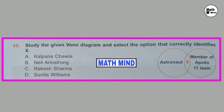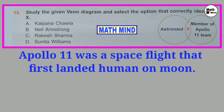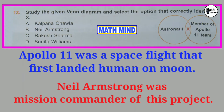Question number 13: Study the given Venn diagram and select the option that correctly identifies X. X is an astronaut who is a member of Apollo 11. Apollo 11 was a spaceflight that first landed humans on the moon. Neil Armstrong, Michael Collins, and Edwin E. Aldrin are members of Apollo 11. Neil Armstrong was mission commander of this project. So correct option is B: Neil Armstrong.